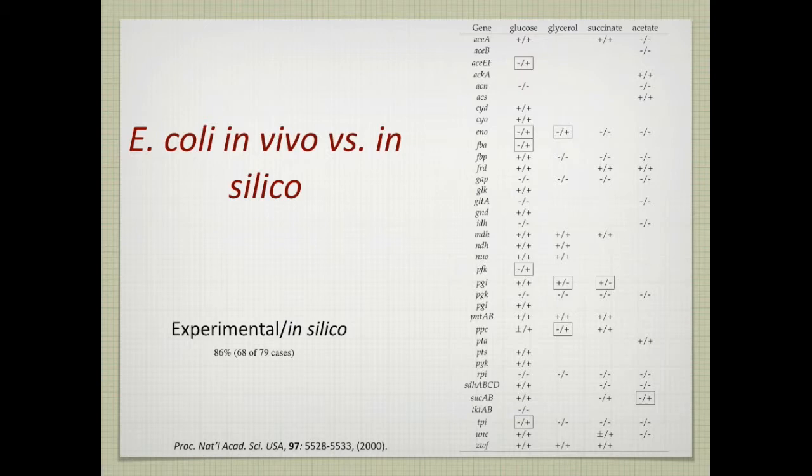So I think in this case, what are the numbers? There's 68 out of the 79 cases in this table were correctly predicted, 86 percent, which was actually an astonishing outcome that you could predict gene essentiality with that degree of accuracy with the genome scale model.